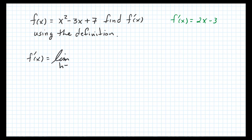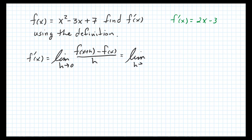But they want us to use the definition, so let's write that out. The definition is: the limit as h goes to 0 of f(x+h) minus f(x), all over h. This is a quadratic so it will take a bit of work. We need to figure out what f(x+h) is — wherever there's an x, we substitute x+h.